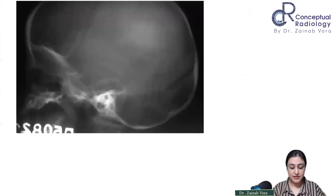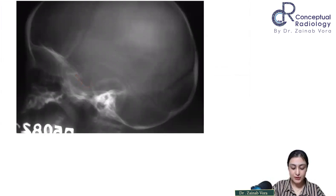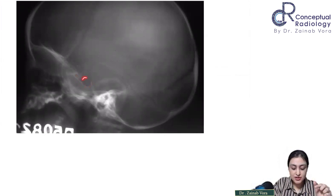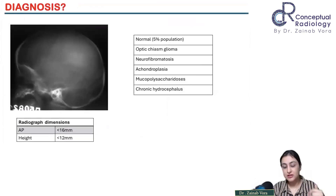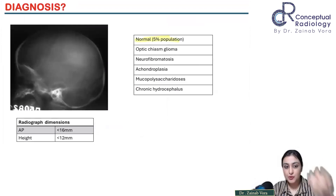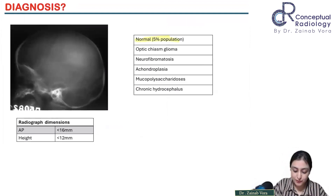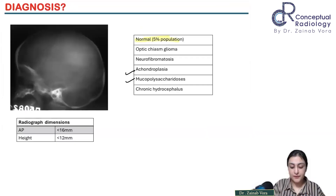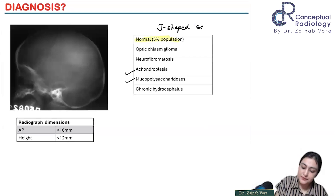This is a very famous spotter asked a lot — what you can see here is a J-shaped sella. The dorsum sellae is maintained as normal but the tuberculum sellae, instead of forming its usual projection, gets flattened — and that is what gives the J shape. The causes: first, it may be a normal variant seen in 5% of the population. Pathological causes include optic glioma (which compresses the anterior tuberculum sellae), neurofibromatosis NF1, achondroplasia, MPS, and chronic hydrocephalus. These are the causes of a J-shaped sella — a very important spotter.